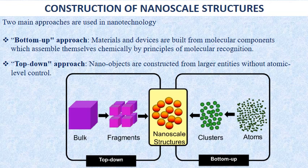The second approach is the top-down approach, where nano-objects are constructed from larger entities without atomic-level control. Several phenomena become pronounced as the size of the system decreases, including statistical mechanical effects and quantum mechanical effects. For example, the quantum size effect, where the electronic properties of solids are altered with great reduction in particle size. Once we enter the quantum realm at distances of 100 nanometers or less, physical properties like electronic, mechanical, and optical properties change compared to macroscopic systems.